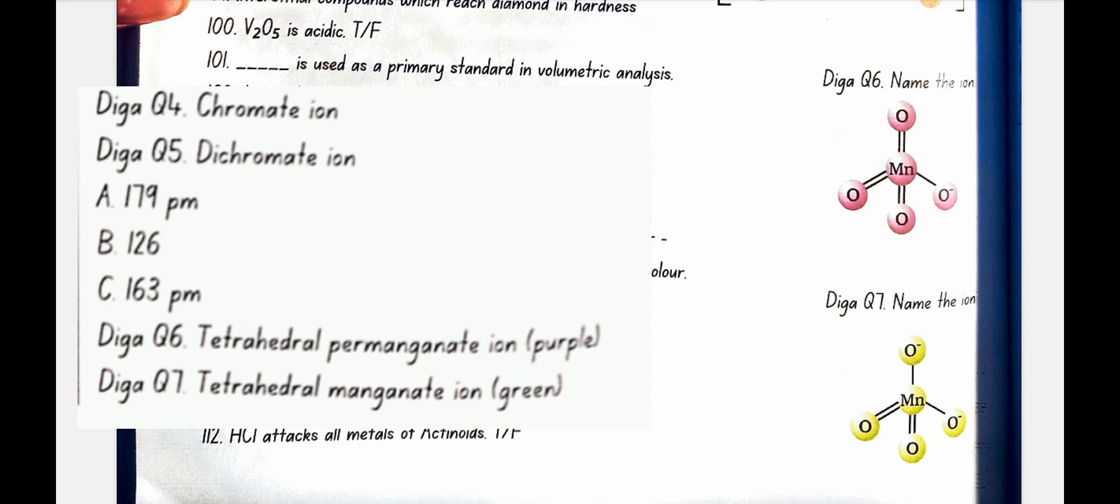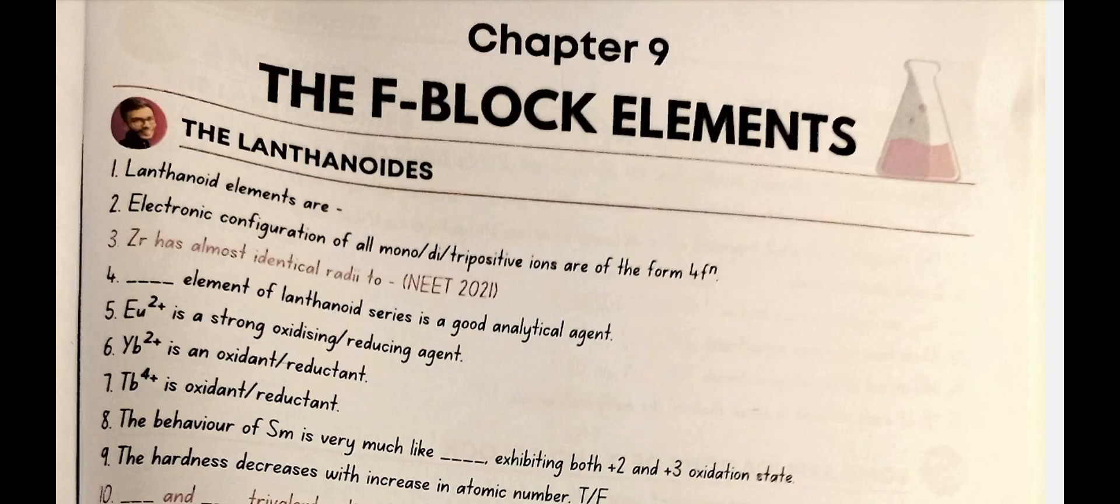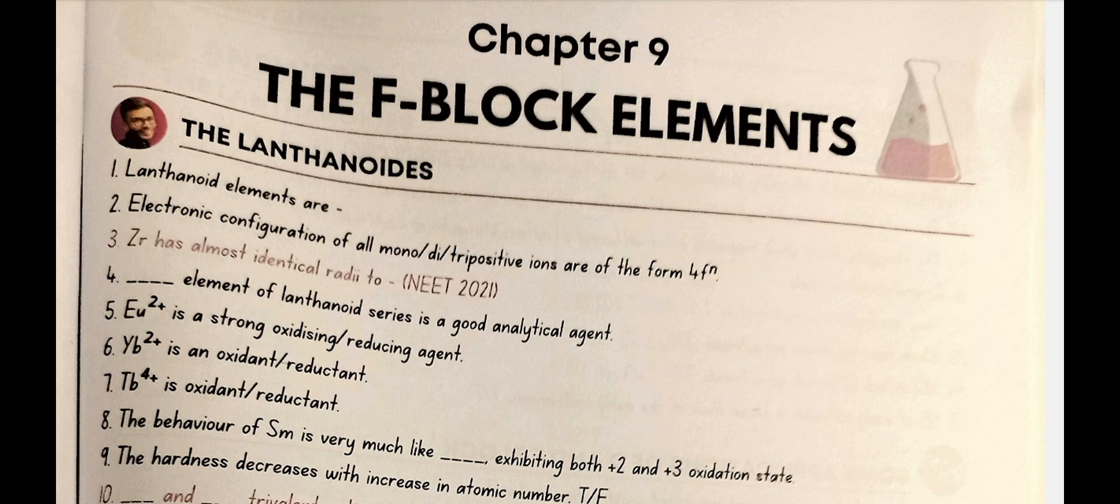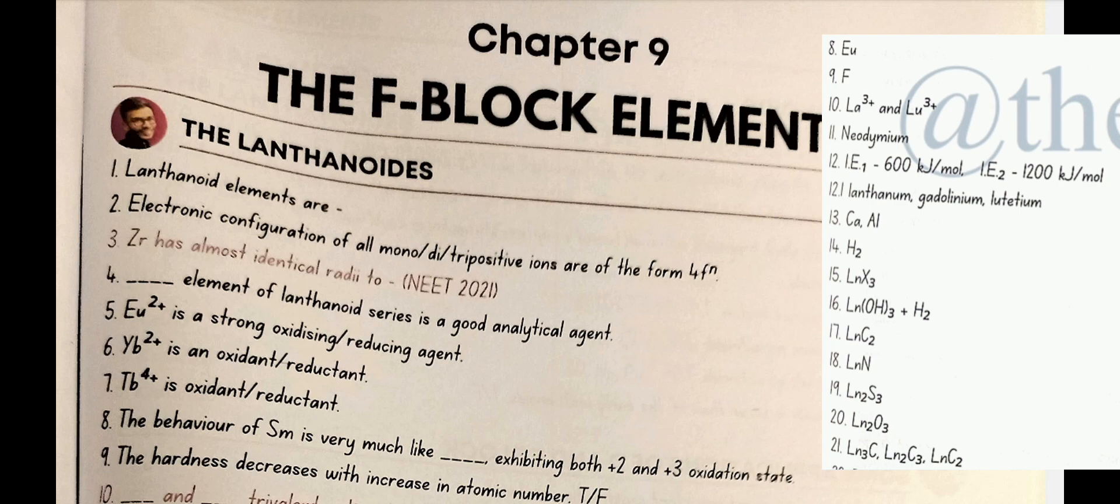The F-block elements. The lanthanoids. Lanthanoid elements are Ce Pr Nd Pm Sm Eu Gd Tb Dy Ho Er Tm Yb Lu. You can learn the trick given in the solutions. Electronic configuration of all mono di or tri positive ions are of form 4f n. Zr has almost identical radii to Hf. Ce4+ is a good reducing agent. Eu2 plus is a strong reducing agent. Yb2 plus is a reductant. Tb4 plus is an oxidant. The behavior of Sm is very much like Eu, exhibiting both plus 2 and plus 3 oxidation state.